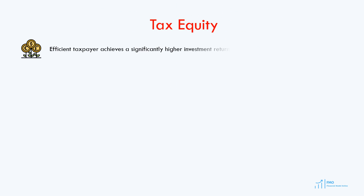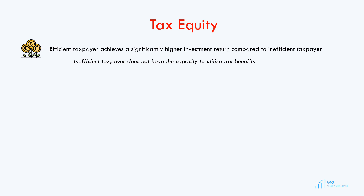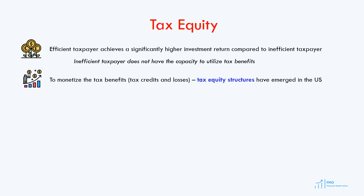We saw in the previous lessons how the efficient taxpayer can achieve a significantly higher equity return because of his tax capacity. He can utilize losses and tax credits generated by the project to offset his tax liabilities from other projects. Since the inefficient taxpayer cannot use the losses and tax credits immediately and has to carry them forward, his investment return is significantly lower. Most of the renewable project developers in the United States are inefficient taxpayers, and to monetize the tax benefits generated by wind and solar projects, tax equity structures emerged since 2005.